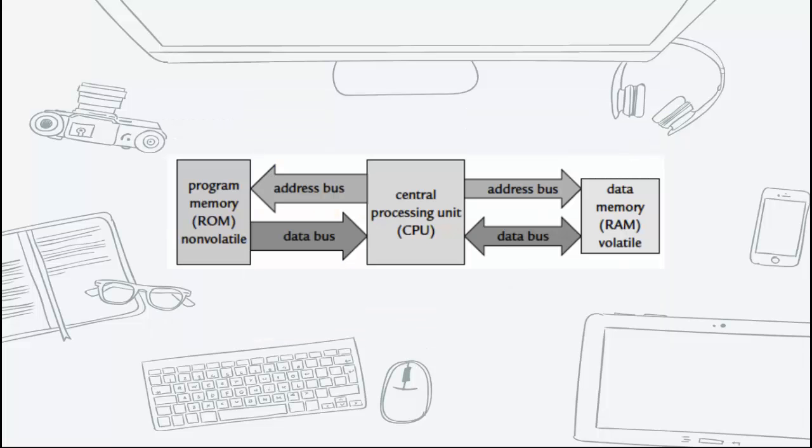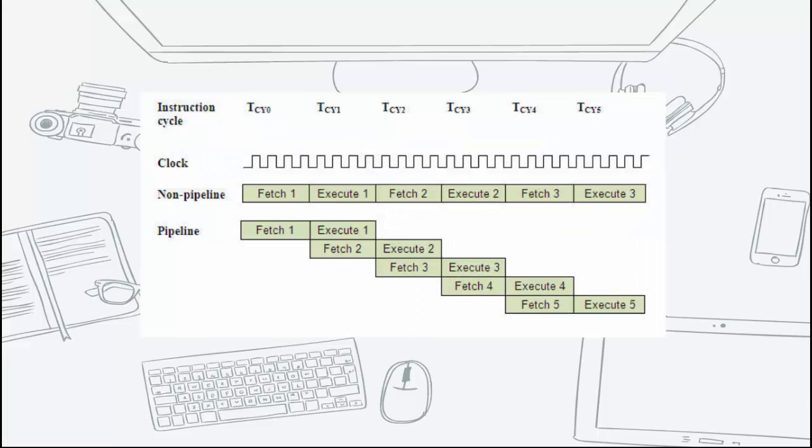Since PIC microcontroller has separate buses for data and instruction, it can simultaneously fetch another instruction while it is concurrently executing one. This process is repeatedly done on every cycle. This is called instruction pipelining. PIC microcontrollers have two-stage pipelining.